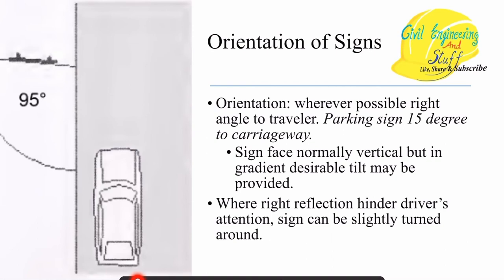Now, what is the orientation of the sign? Conventionally, traffic signs are made vertical — they face vertical to the gradient of the road so the driver moving on the road can see them. But if it is observed that the reflective index is so high that it hinders the driver's attention, the traffic sign can be turned as required to reduce glare — for example, instead of 90 degrees, it can be set to 95 degrees.